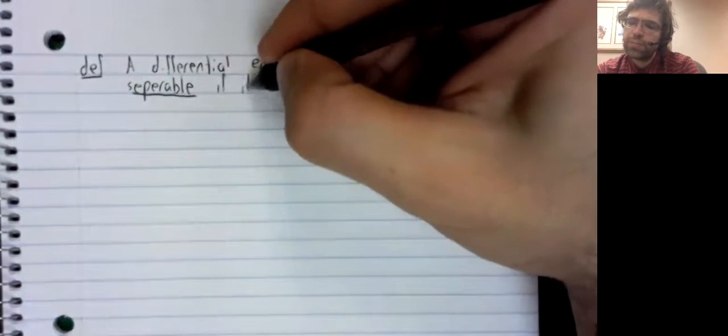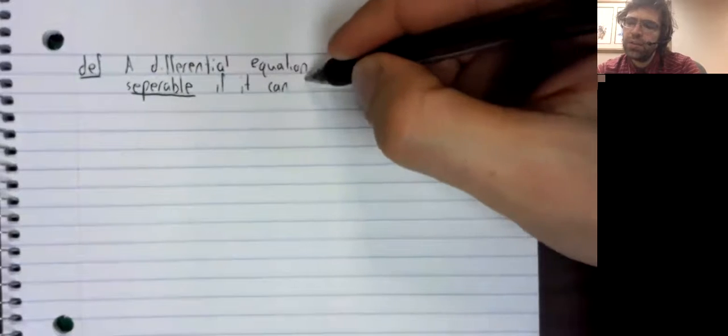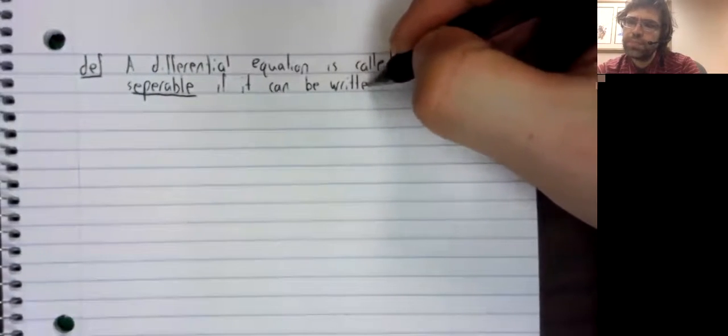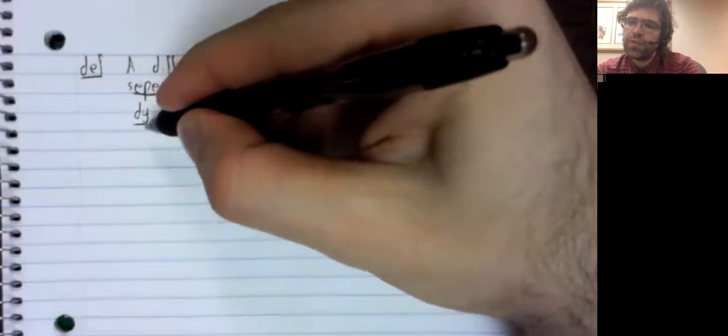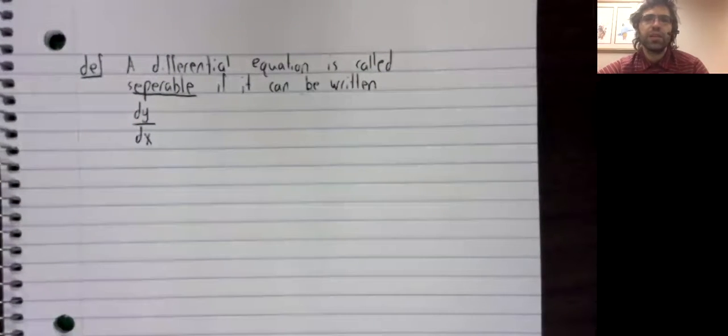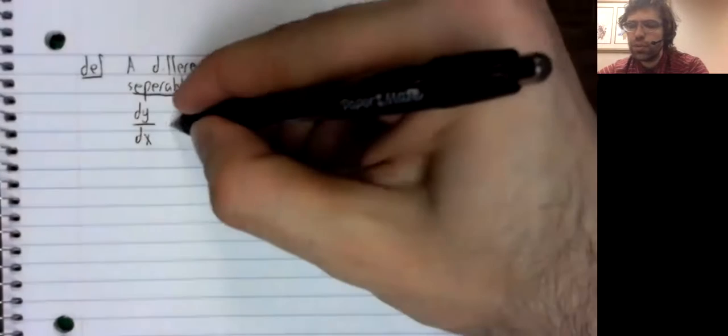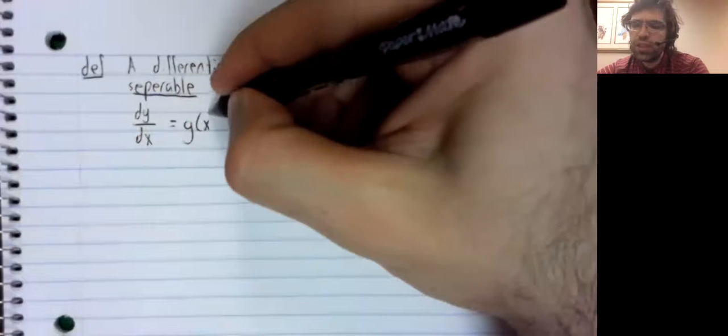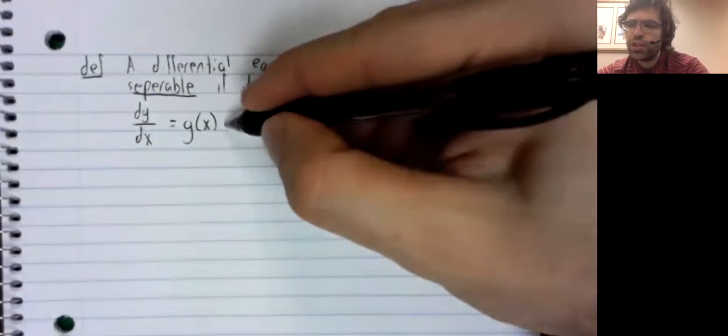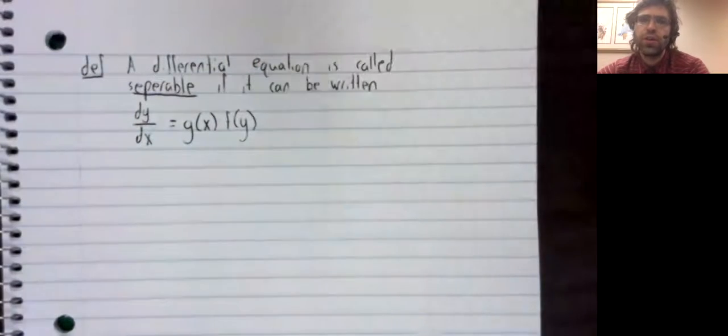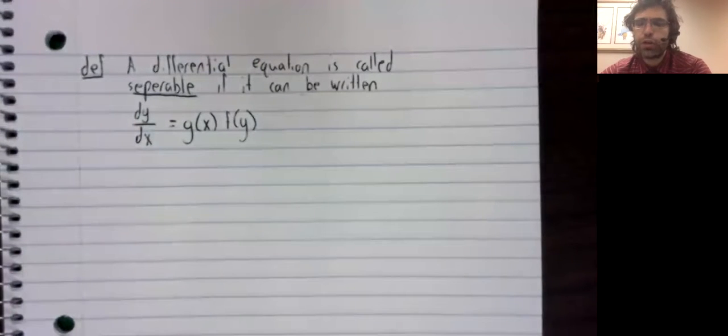if it can be written, the derivative of the dependent variable with respect to the independent variable is a function of the independent variable times a function of the dependent variable.